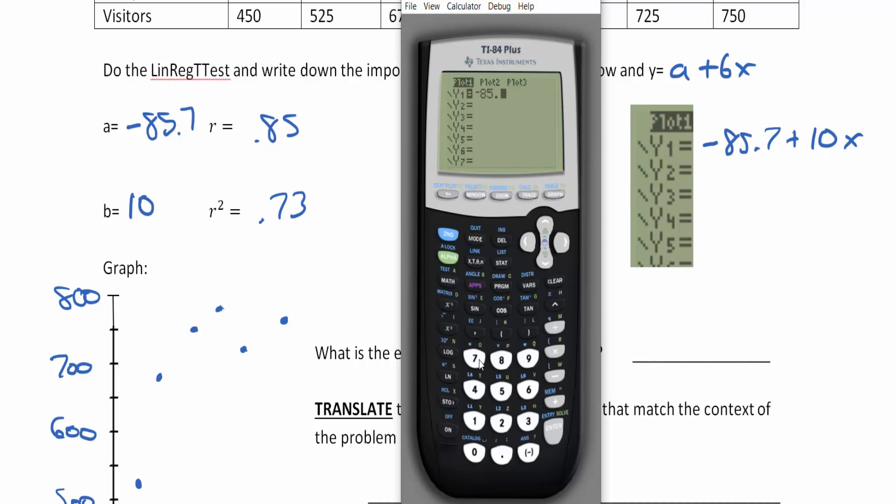I'm going to click on my y equals and type in negative 85.7 plus 10x. You also could have done 10x plus negative 85.7. There's really three ways to do it, but this is the way that the calculator has it. And so there is our beautiful line of best fit.